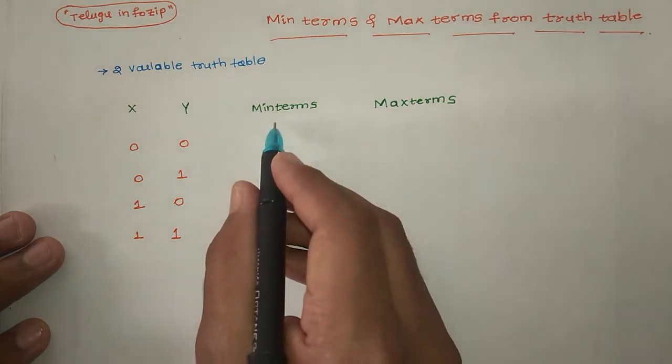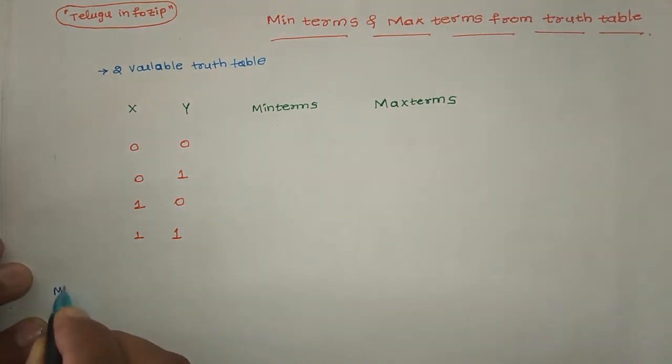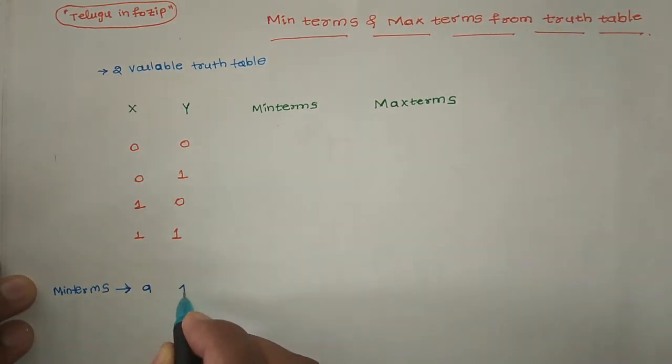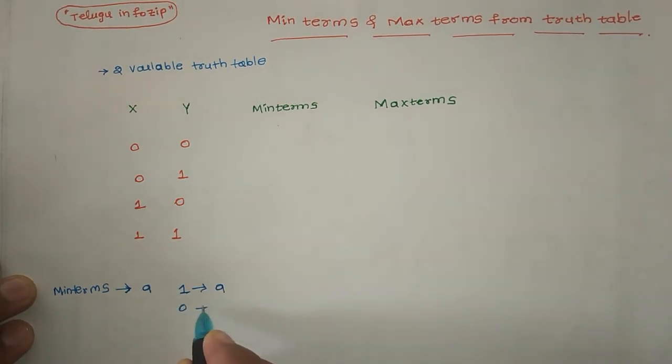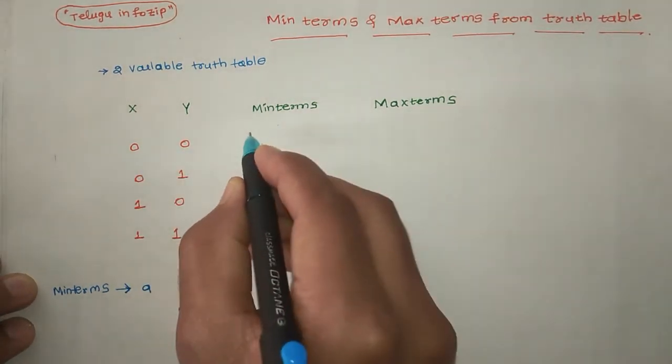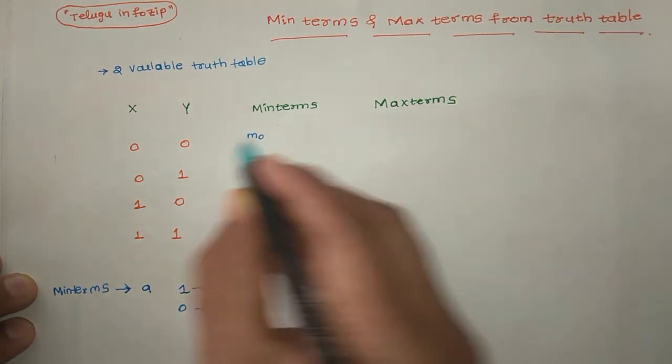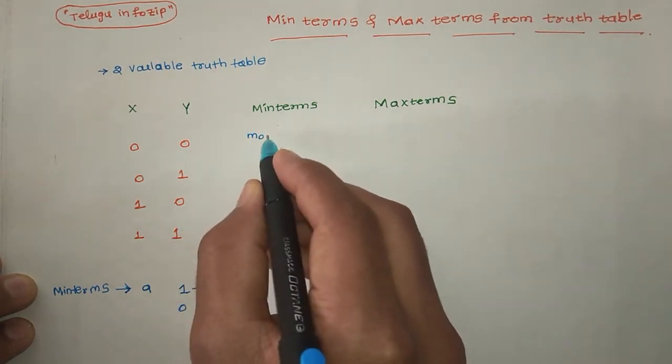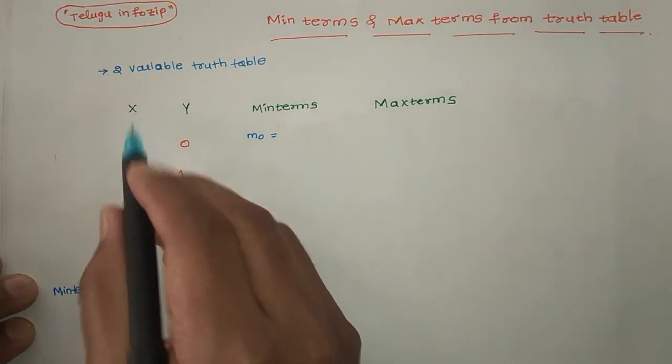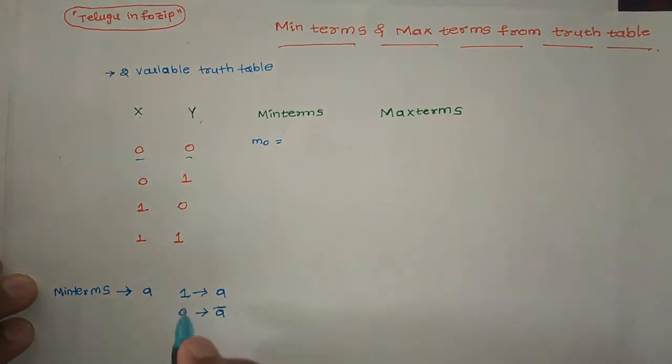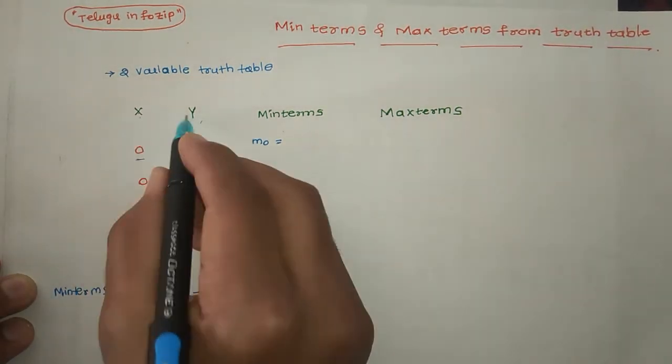This is a min terms form. So how do you know min terms? For example, variable X is a min term. One represents the variable as is, zero represents the variable with a bar. Min terms use product notation, denoted by m subscript. m0, that is equal to: here X value is 0, Y value is 0. So here 0 represents bar. So X bar Y bar, X bar dot Y bar.